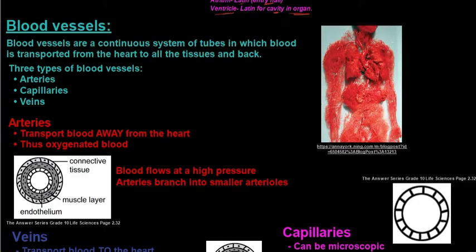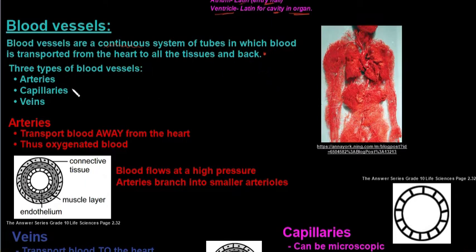In this video we'll be looking at blood vessels — the different kinds of blood vessels found in the human body and their structures. Blood vessels are a continuous system, meaning they are all connected tubes in which blood is transported from the heart to all of the tissues of the body and then back to the heart. The three types are arteries, capillaries, and veins.